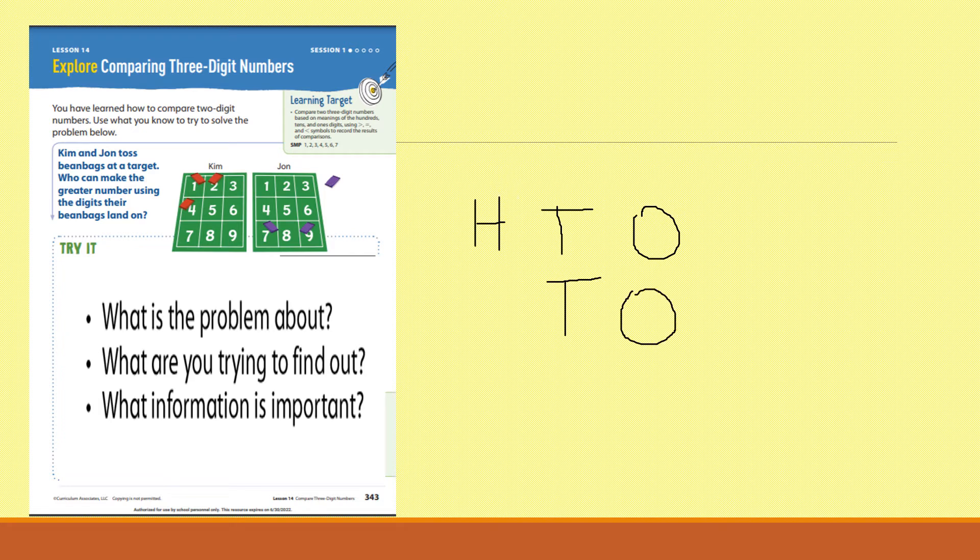So, boys and girls, let's answer the question. Who can make the greater number using the digits their beanbag land on? Kim or John? Kim can. You're absolutely right. And why is that? Because she can make a three-digit number with a hundred, and John can only make a two-digit number with a ten.